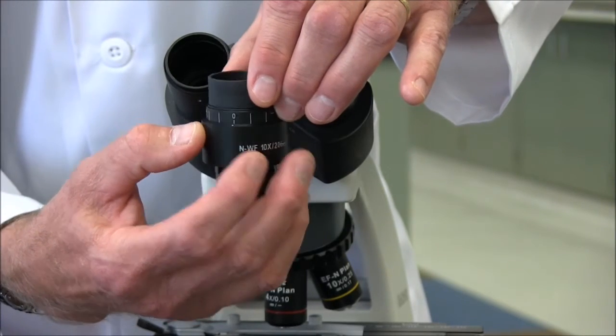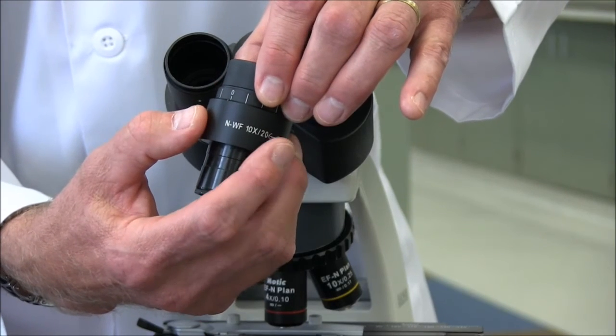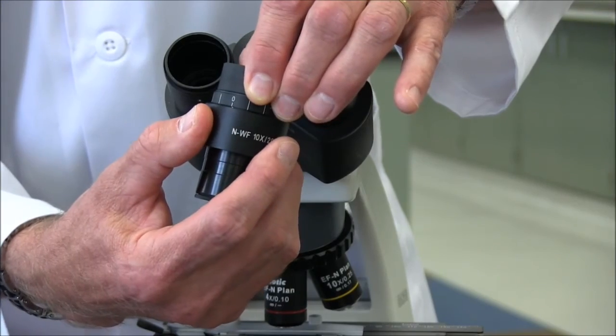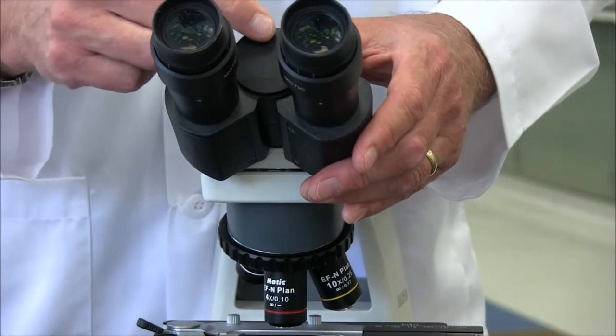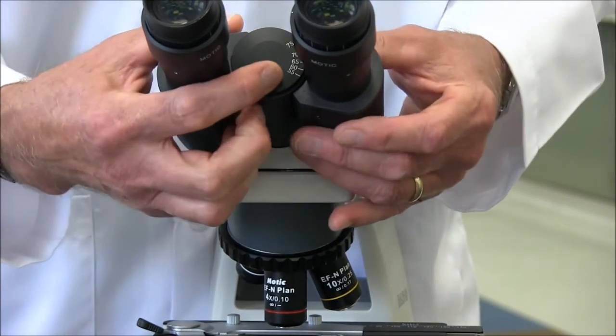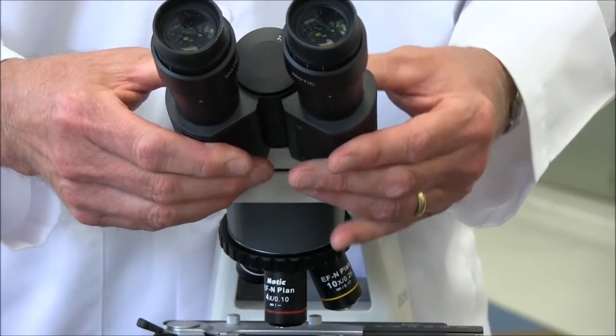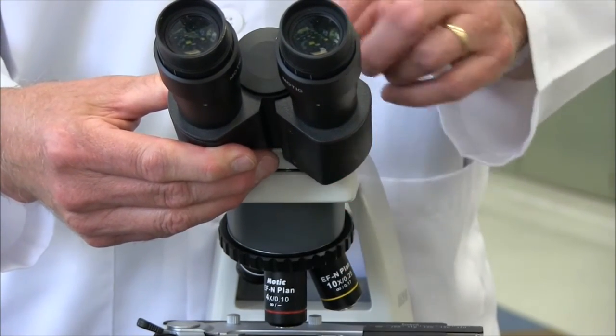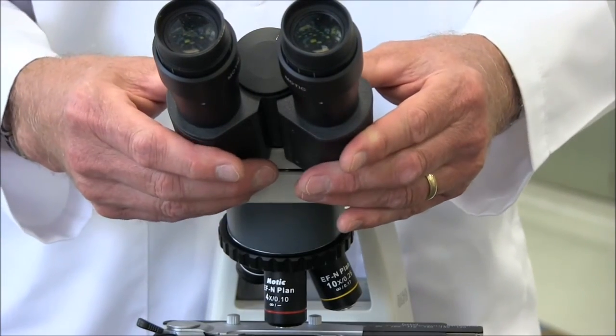If you have 20-20 vision, you would set the dot at zero and you should be able to see the specimen clearly. But if one of your eyes is weaker or stronger than the other, you can adjust it to compensate for that so that you can see the image clearly. The other scale that's important is the interpupillary distance scale, which is a scale from 55 to 75. And as the name indicates, that's the distance between your pupils. You can adjust the eyepieces until you're comfortable seeing a single image, and then make note of this number because the next time you sit down, it'll be quicker for you to set up the microscope to see the image.